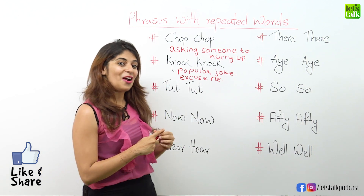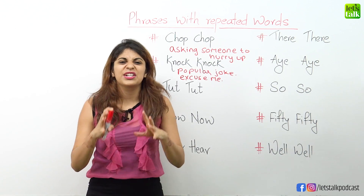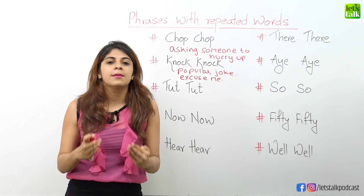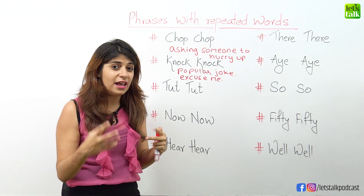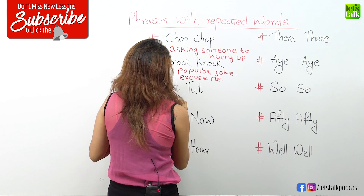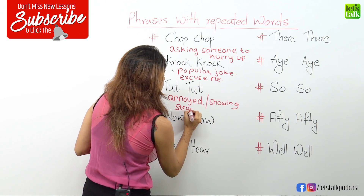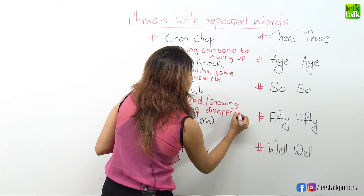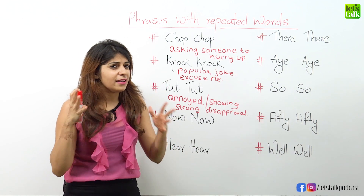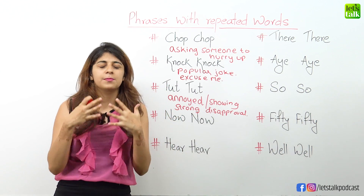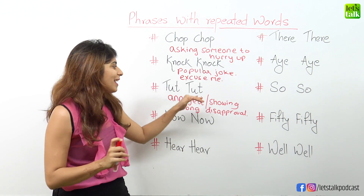Let's move on to the third phrase, which is 'tut tut'. Now that sounds a little funny but what exactly does it mean? When you are extremely annoyed and you want to express strong disapproval towards something or someone, then you say 'tut tut'. For example, your kids at times annoy you with their demands, and parents get a little annoyed and want to show disapproval. So they can say 'tut tut, I am not gonna take this — I am so done with these demands'. That's how you can use this expression.